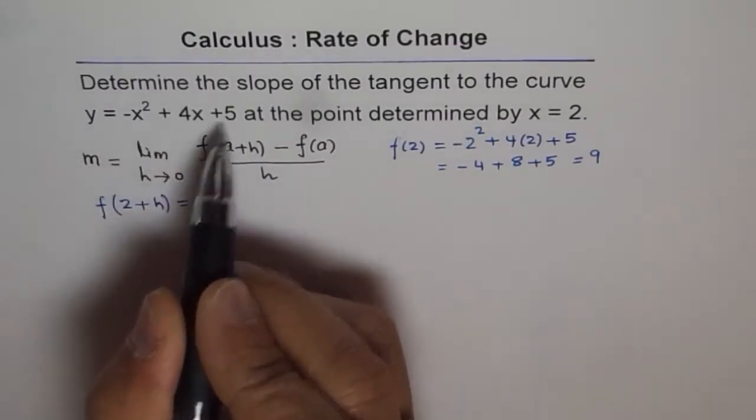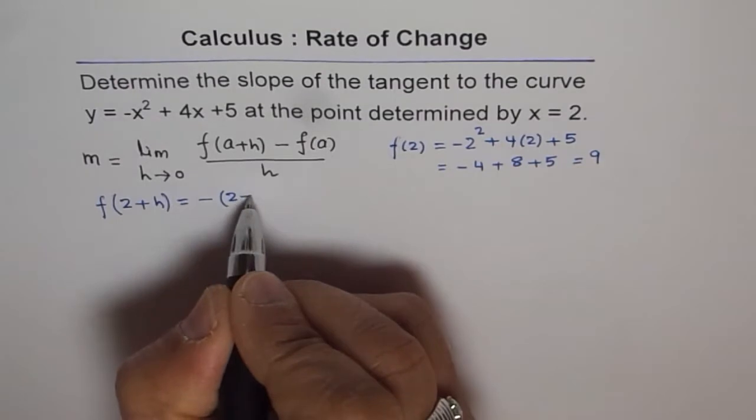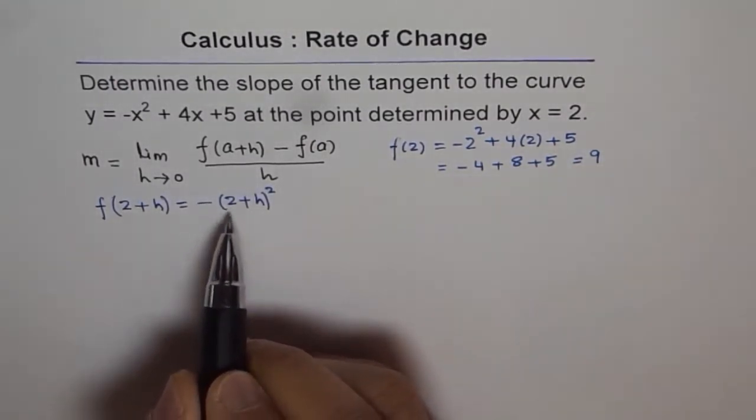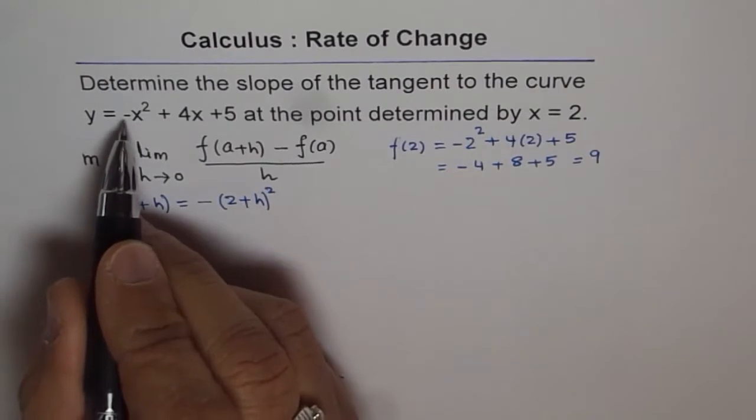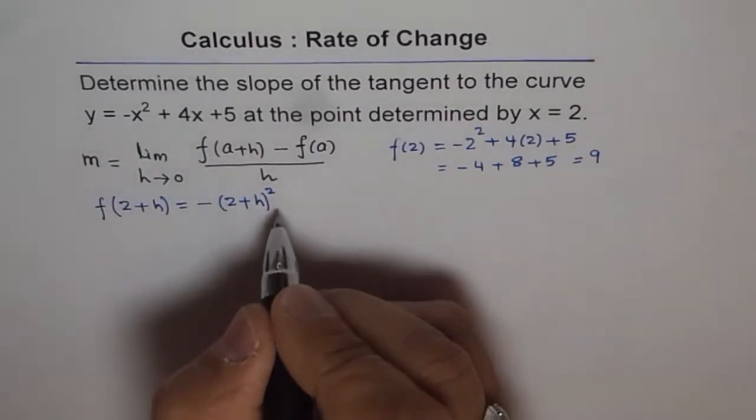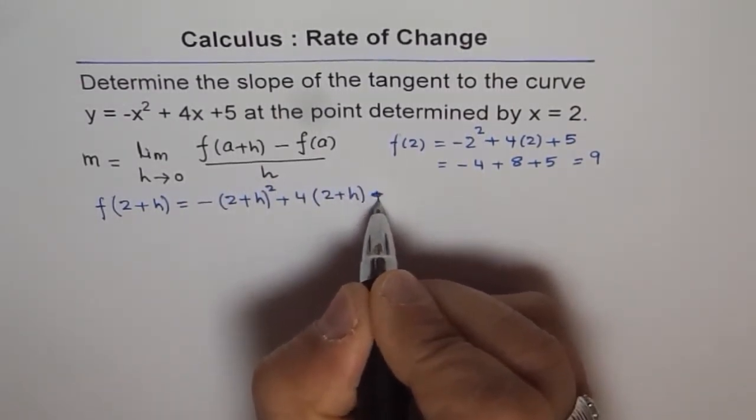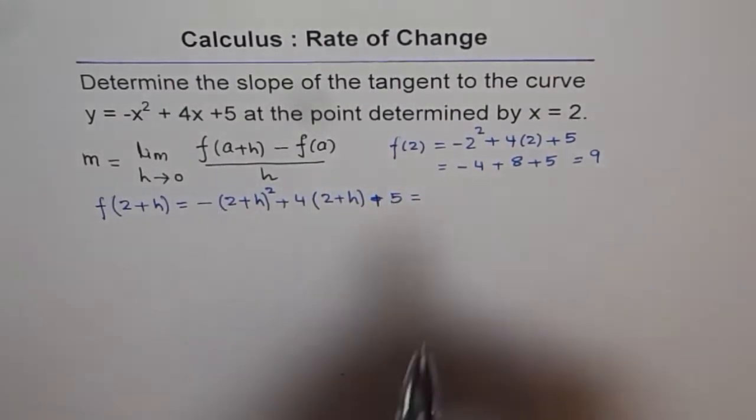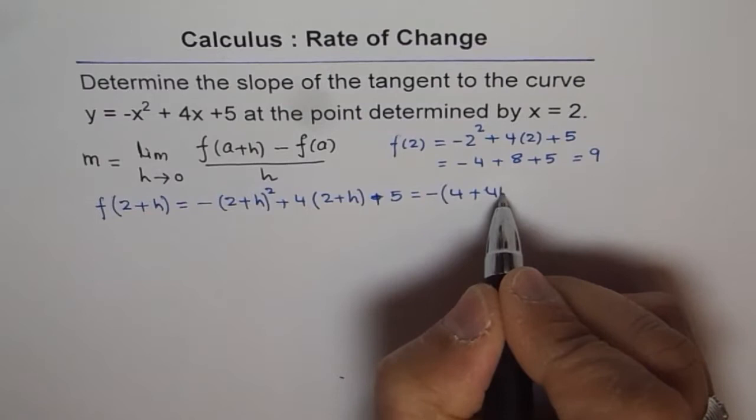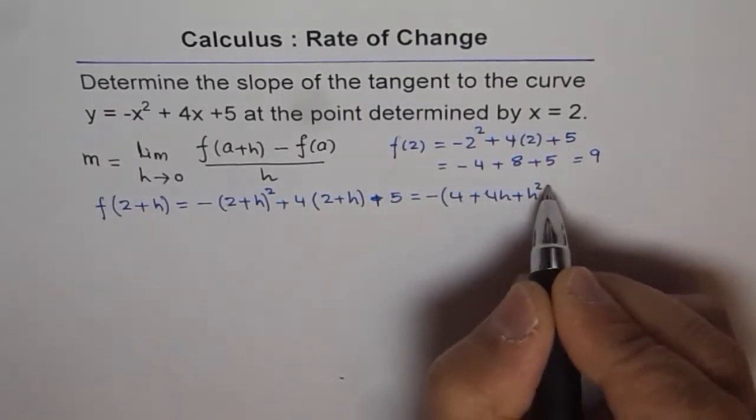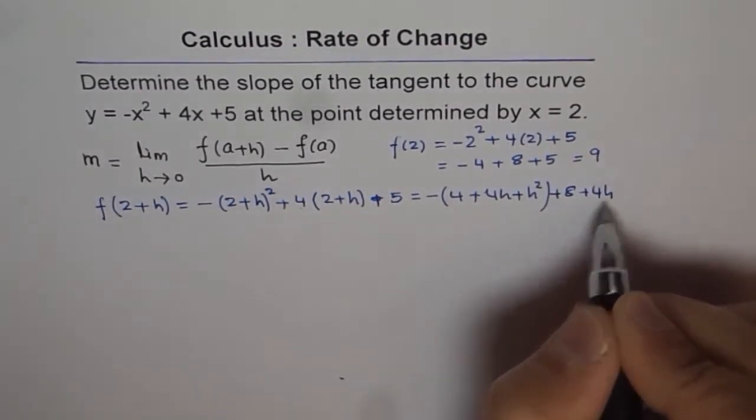We will replace all the x's with 2+h to find f(2+h). So it is -(2+h)² + 4(2+h) + 5. The minus is outside and x is 2+h. Expanding the square: 4 + 4h + h², so we get -4 - 4h - h² + 8 + 4h + 5.